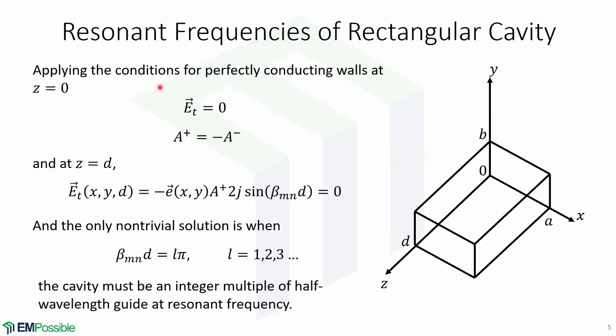Now for the cavity, we apply the conditions for perfectly conducting walls at z equals 0 and z equals d. For z equals 0, we have that the transverse field equals 0 and A plus equals minus A minus. And at z equals d, the transverse field equals 0. The only non-trivial solution for this expression is when βd equals lπ where l equals 1, 2, 3, etc. This means that the cavity must be an integer multiple of a half wavelength guide at resonant frequency. No non-trivial solutions are possible for other lengths or for frequencies other than the resonant frequencies.